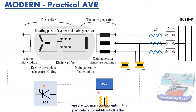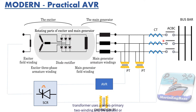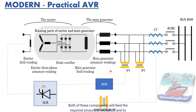There are two main components in this particular application: the AR operator AVR, which uses a potential transformer to measure the voltage, while the compound transformer uses a CV primary two winding and a current or shunt primary one winding. Both of these components work together to finalize the required amount of excitation and to maintain the regulated voltage output of the generator.